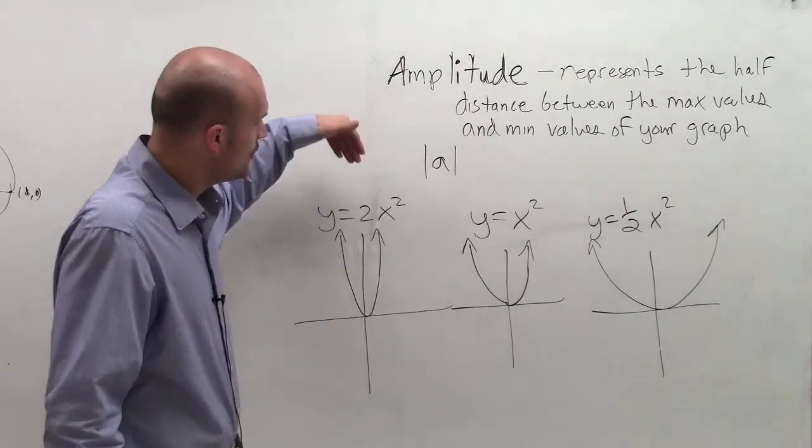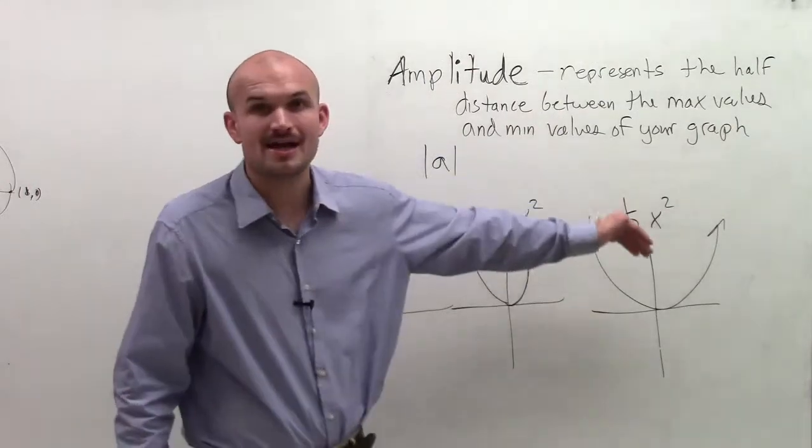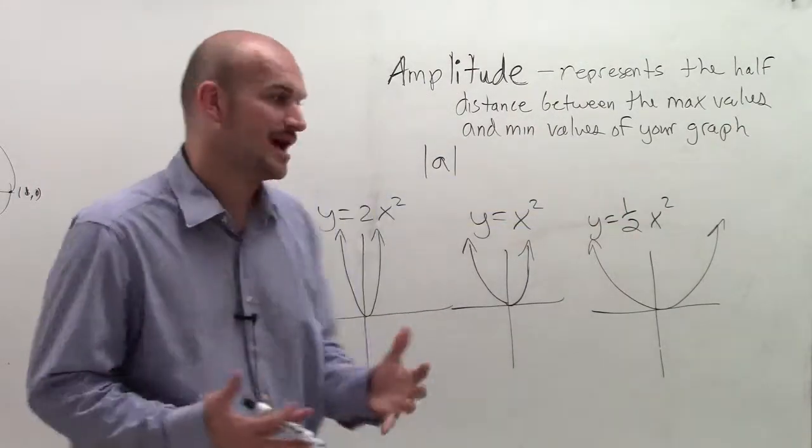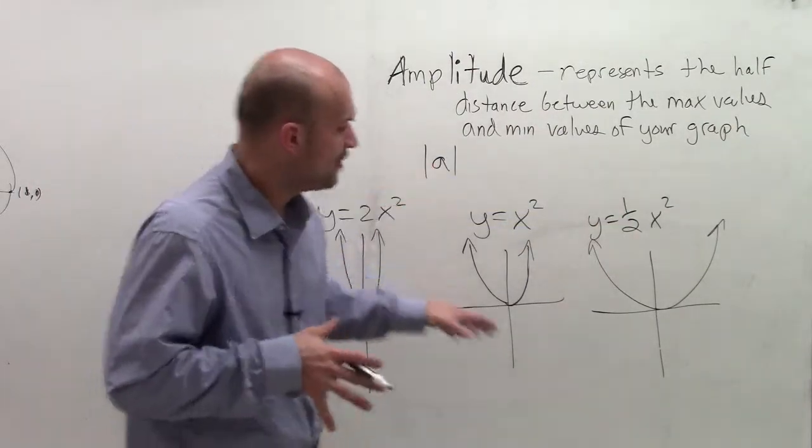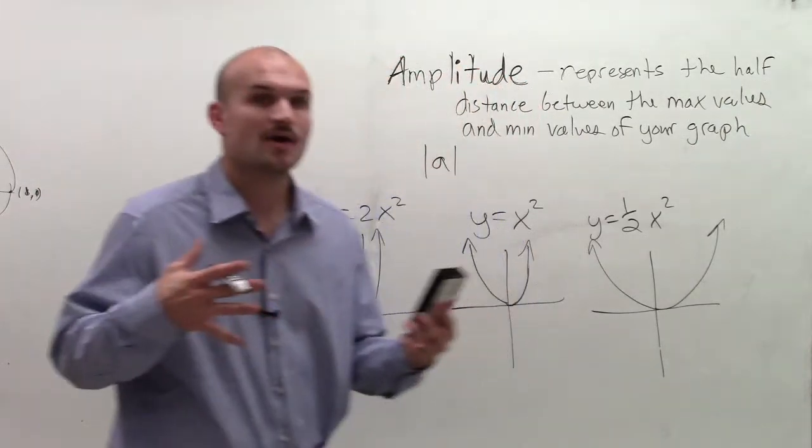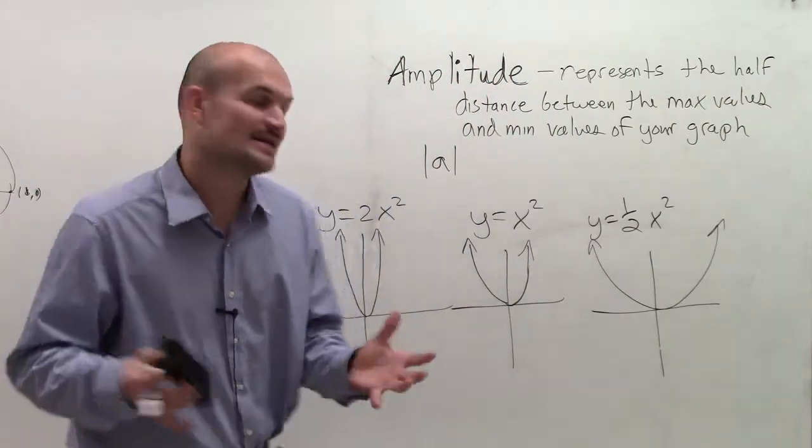So remember, when multiplying a function by a factor, it has an effect on its graph. And when we multiply our function by our factor of A, it's going to do that exact same thing.